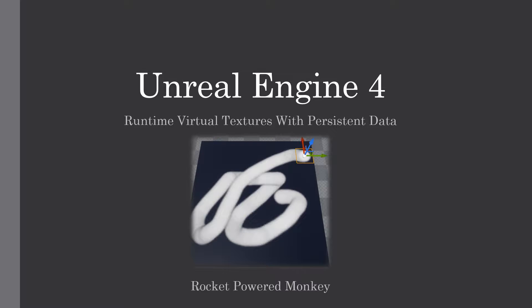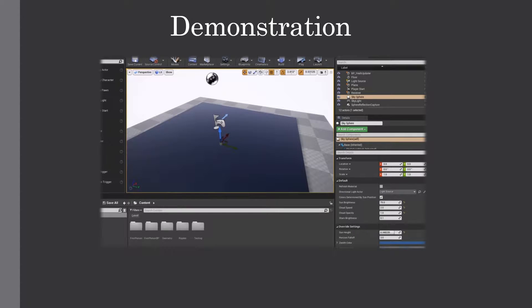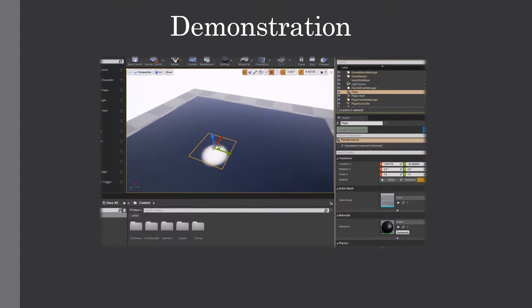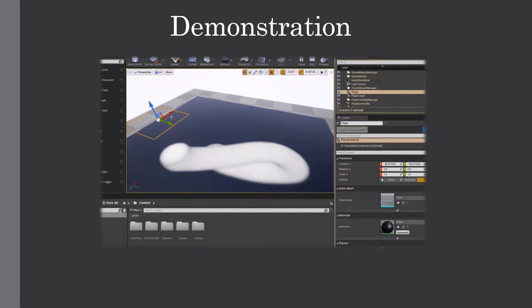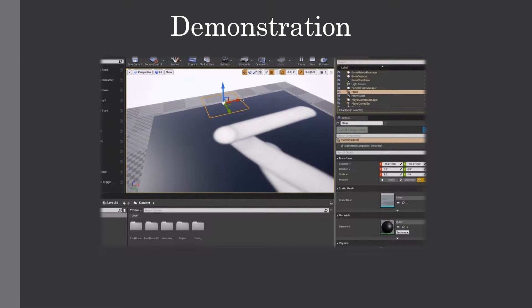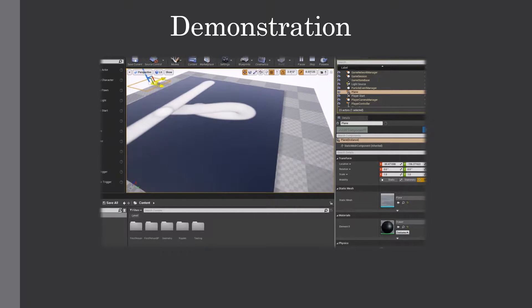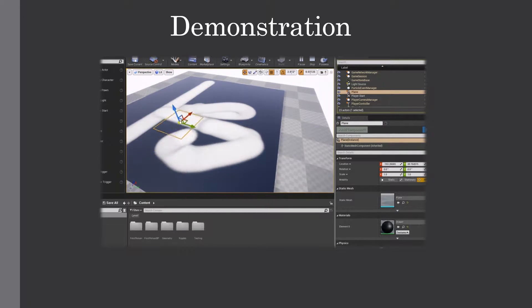Hello and welcome to this presentation on how Runtime Virtual Textures can be used like render targets with persisting data between frames. I have this object that draws to the plane, and the previous stuff drawn to it still remains between frames.